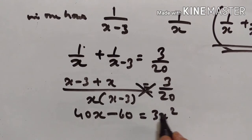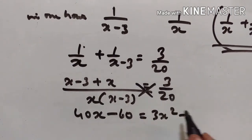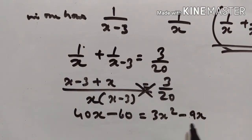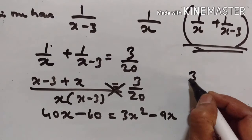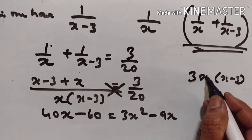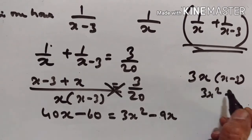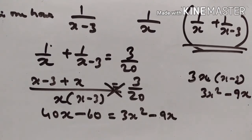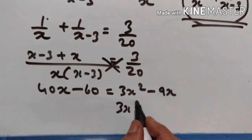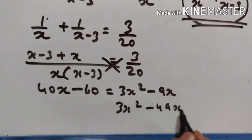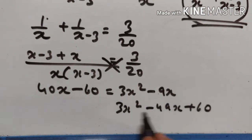Expanding the right side: three x(x minus 3) equals three x squared minus nine x. You can multiply separately if you get confused: three x into x minus three gives three x squared minus nine x. So we have: three x squared minus nine x minus 40x plus 60 equals zero, that is three x squared minus 49x plus 60 equals zero.